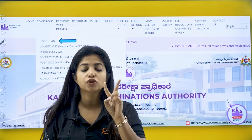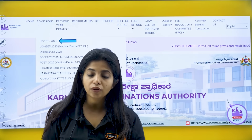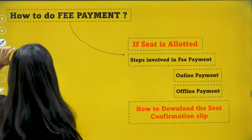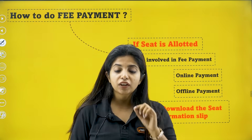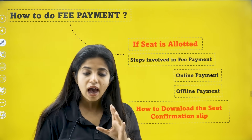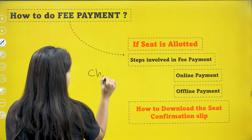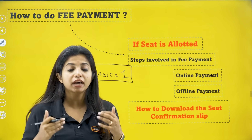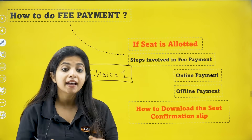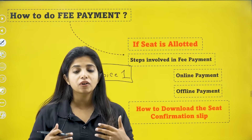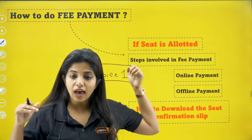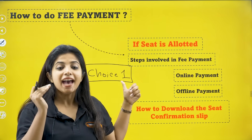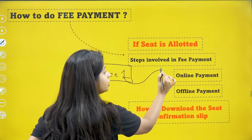I am going to deal with the first two processes: how you can do the fee payment and how you can download your seat confirmation slip. First of all, you need to understand that fee payment is for those people who have gone with Choice 1 — meaning you are happy with the college, you want your admission done, and you would not be going any further with the counselling process. If you have taken Choice 1, you would be automatically out of the counselling process.